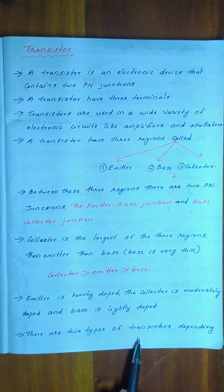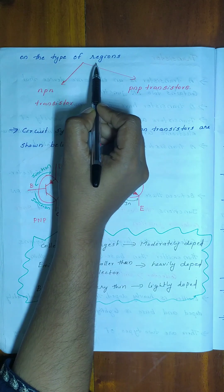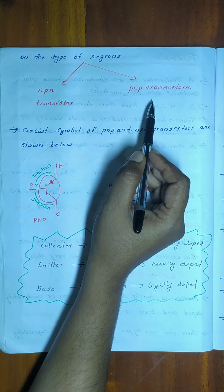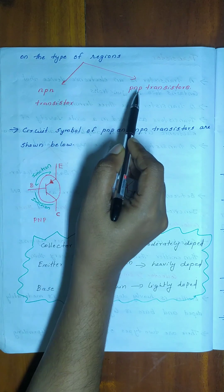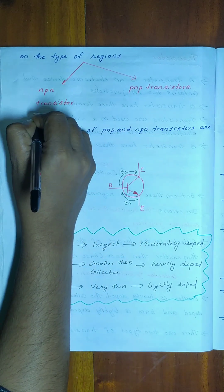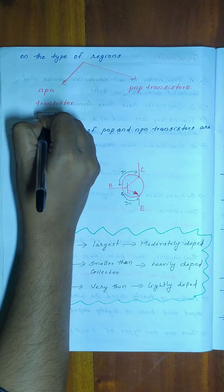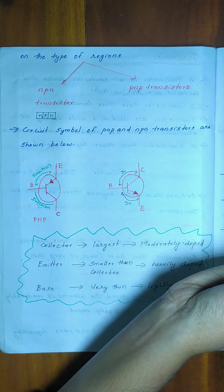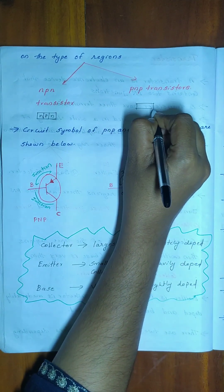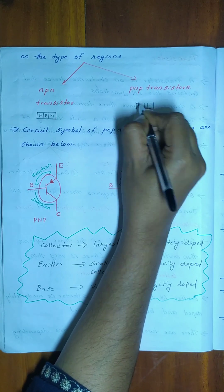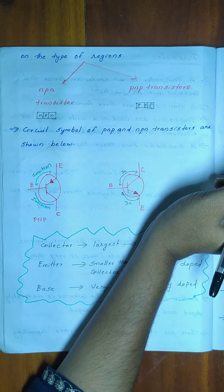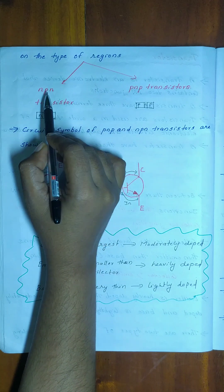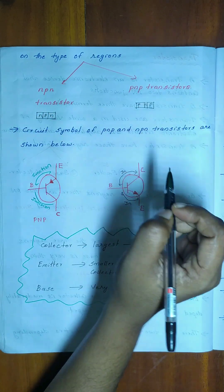There are two types of transistors depending on the type of region: the NPN transistor and the PNP transistor. The NPN transistor has three regions.